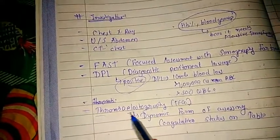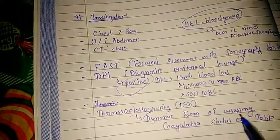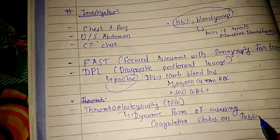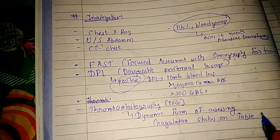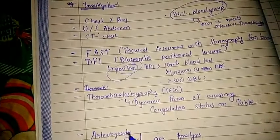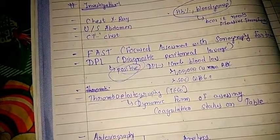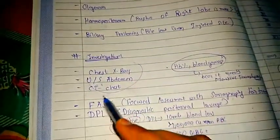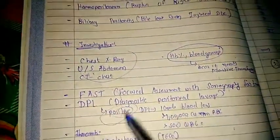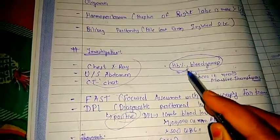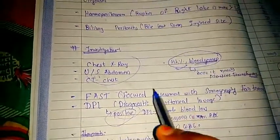We can also go for thromboelastography (TEG), which is a dynamic form of assessing the coagulation status of the patient. We can go for arteriography and arterial blood gas analysis as special investigations.